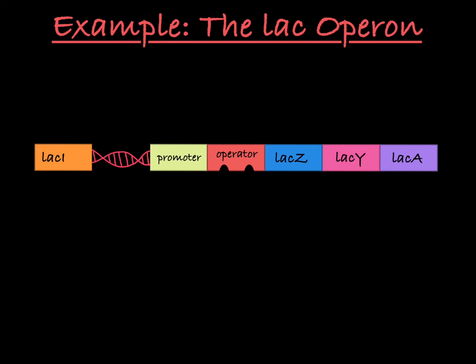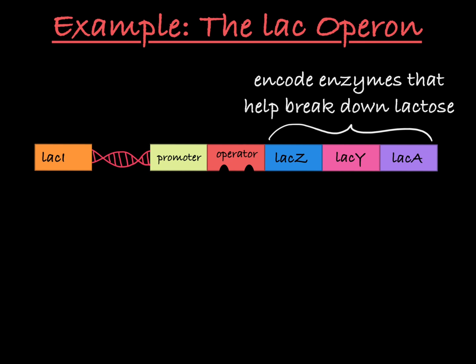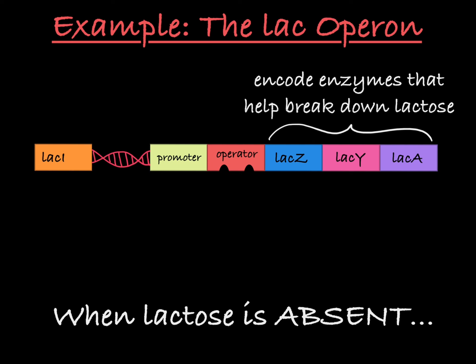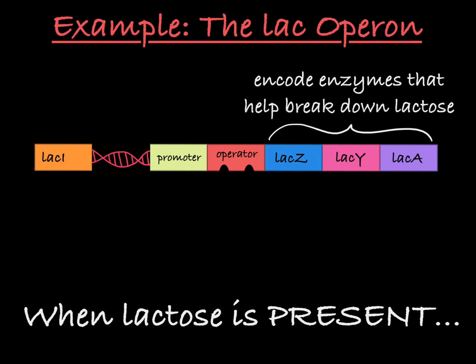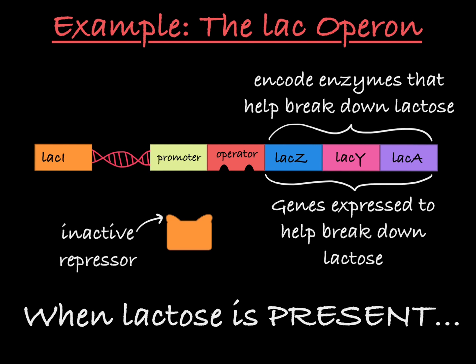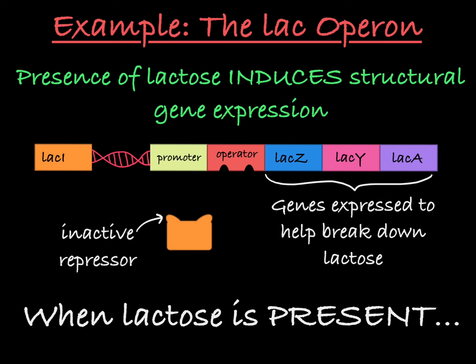The most common example of an operon is the lac operon, which contains structural genes that encode enzymes that help break down lactose. When lactose is absent from the environment, the repressor is active and the lac operon is repressed, meaning the structural genes are not expressed. This prevents the cell from making proteins to break down lactose when it doesn't actually need them. When lactose is present, the repressor becomes inactive and the lac structural genes are expressed, producing proteins necessary to break down the lactose in the environment. In this way, the presence of lactose induces the operon, leading to lac gene expression.